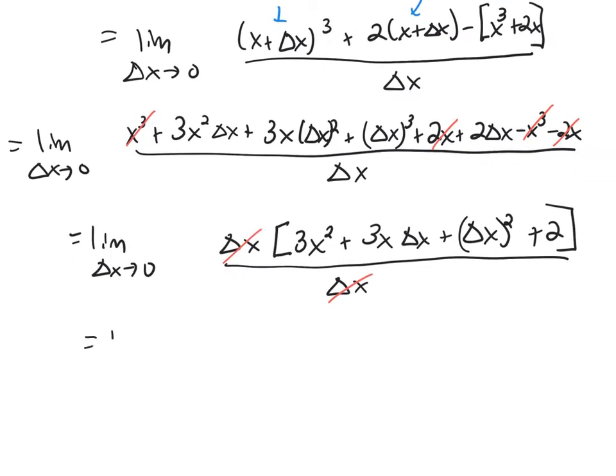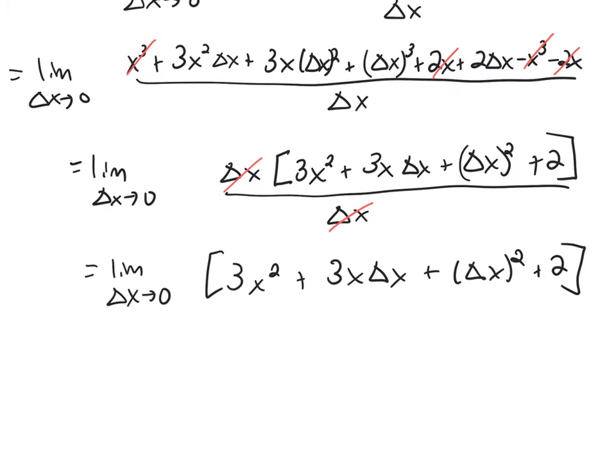And you're looking at the limit as delta x goes to 0 of what's left. And now you're going to be able to plug in 0 for delta x. And what am I going to be left with? 3x squared. This term would be 0. This term would be 0. Plus 2. And there is my derivative.